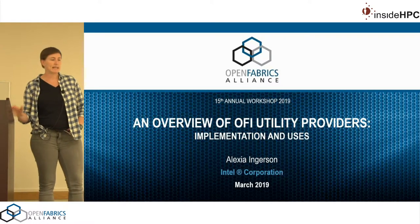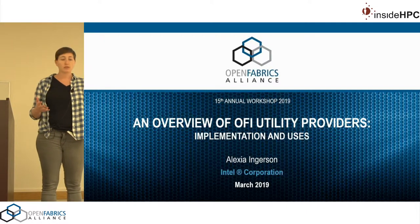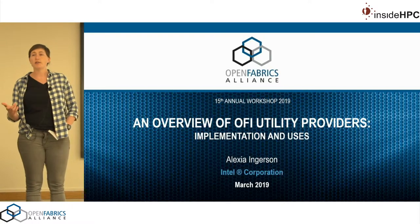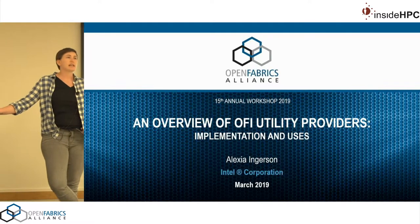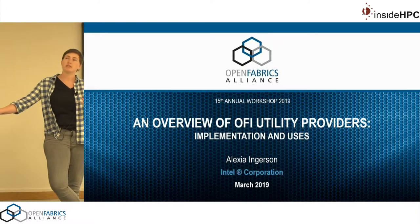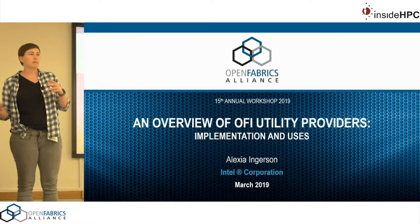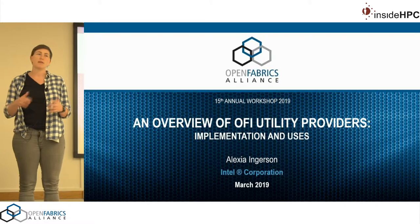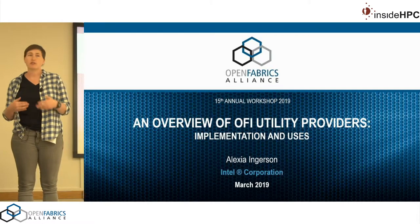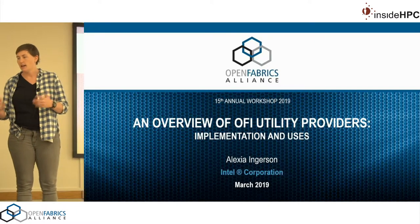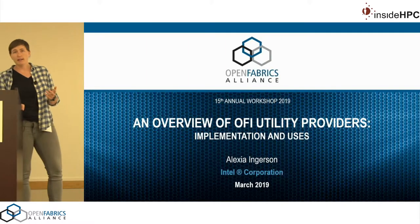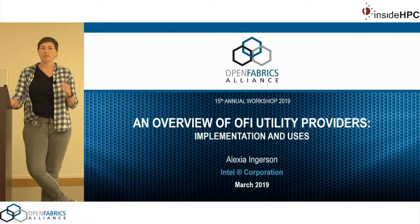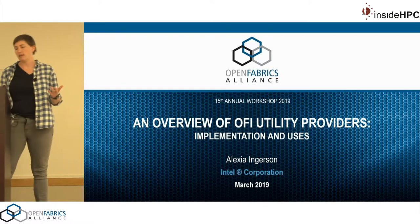If you don't know what a utility provider is, it's basically a way to abstract common routines such as completion counters, completion cues, atomics, tag matching, things like that. We abstract that into common code and then implement these utility providers that can focus more on specific routines or protocols to enhance other providers. The aim is to layer them on top of core providers to add features or increase the message size. I'll be walking through specifically three utility providers that we've done a lot of work on in the last year or two, what they do, the protocols they implement, and how they help the core providers.